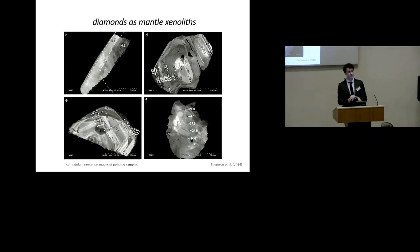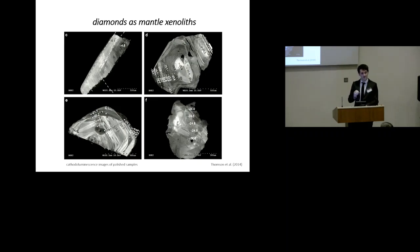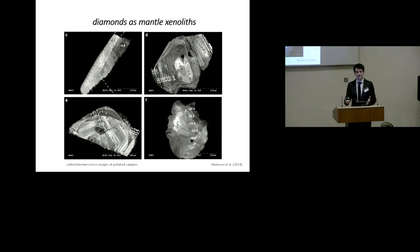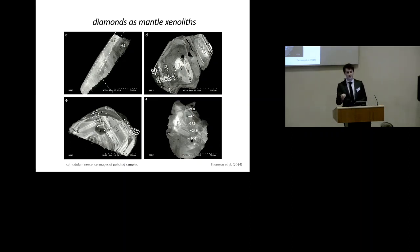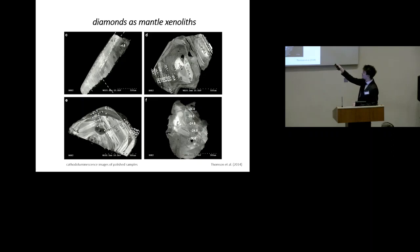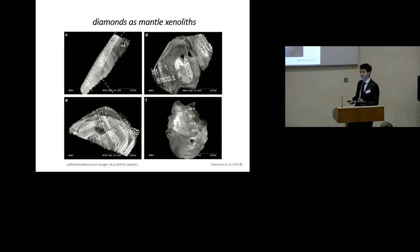We take the diamonds and polish them on a jeweller's wheel to expose a flat surface, which we study by various techniques to make analyses at different points. These are cathode luminescence images - the different grayscale shows the concentration of a defect in the diamond structure, highlighting the growth history. You can see concentric layers of growth around a central nucleus. The numbers represent the isotopic carbon composition at different points, and the black areas are silicate mineral inclusions trapped within the diamonds.